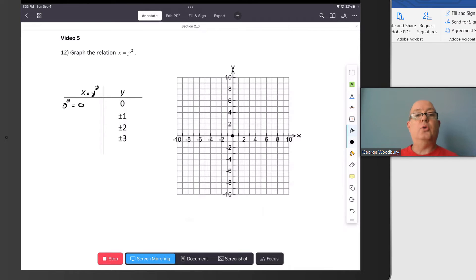When y is 1 or negative 1, when we square that, 1 squared is the same as negative 1 squared, which is 1. So we've got a point at 1, 1, but also 1, negative 1.